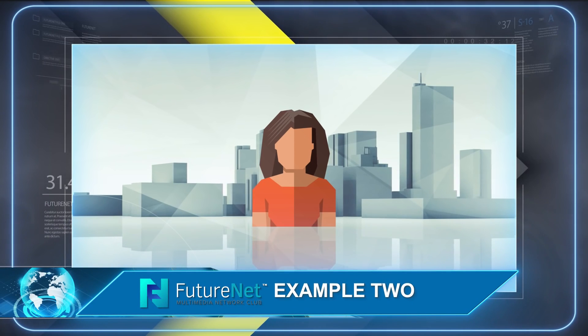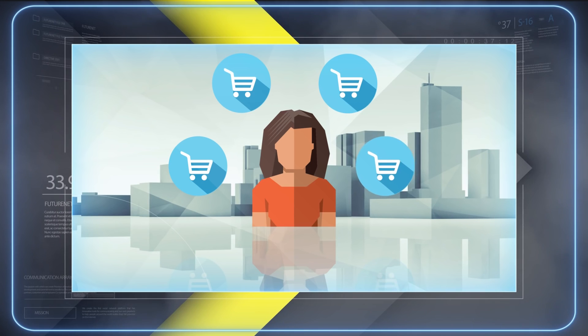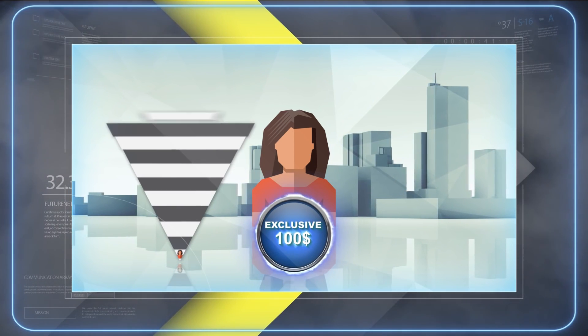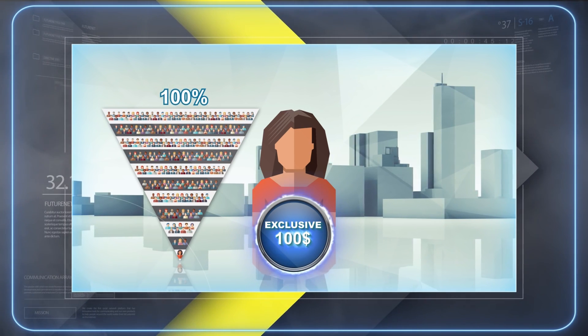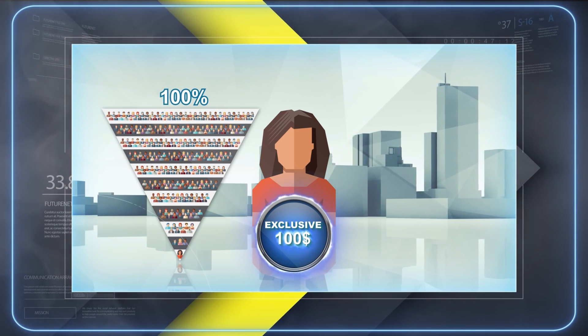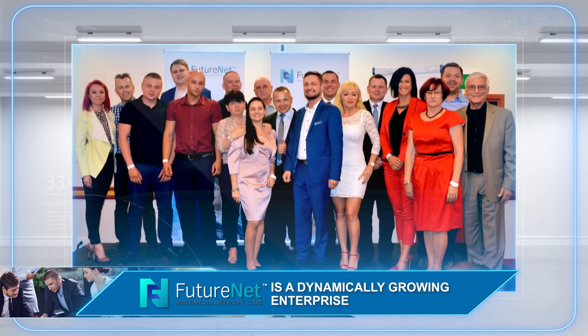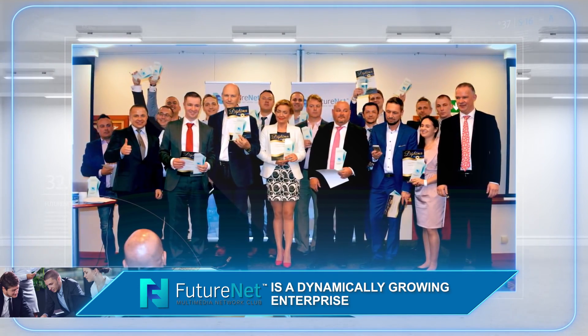In the second example, we will present the earning possibilities after purchasing products at the exclusive level. Also here, we assume that your structure will be gradually filled in 100%. Then your potential at the exclusive level will amount to $800,000. FutureNet is a dynamically growing enterprise. Every day, many of our partners achieve high incomes and pay them out on a daily basis.